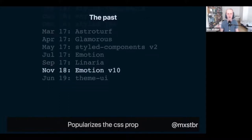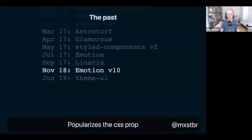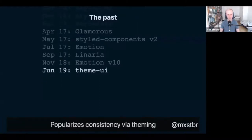In November 2018, Emotion released version 10. The important thing about Emotion v10 is that they invented their own API called the CSS prop. Suddenly you could put a CSS prop on any HTML tag, write your CSS in there, and it would attach it as a unique class name and inject into the DOM — a really fantastic API that feels really nice to use. They weren't the first to implement it, but they really popularized it. Then in June 2019, my boss Brent Jackson released Theme UI, which took the CSS prop API idea and honed in on making the experience of writing themeable component libraries the best it could be. We use it for basically all our stuff at Gatsby.